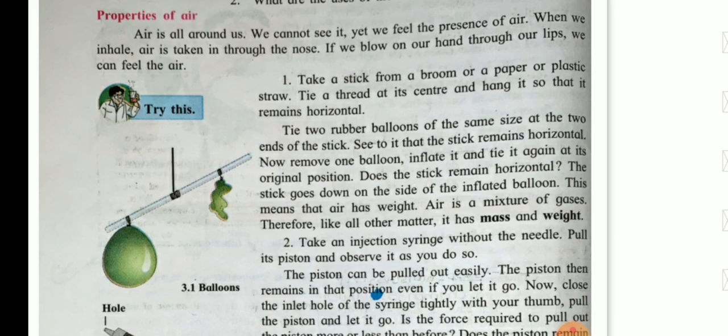Tie two rubber balloons of the same size at the two ends of the stick. See to it that the stick remains horizontal. Now remove one balloon, inflate it, and tie it again at its original position. Does the stick remain horizontal? The stick goes down on the side of the inflated balloon. This means that air has weight.